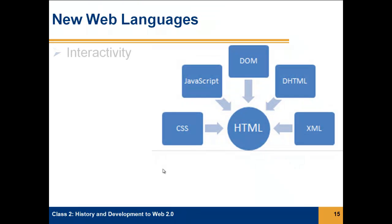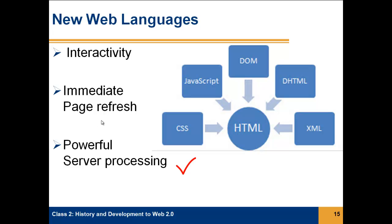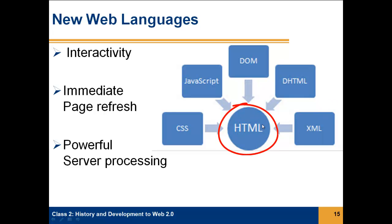New web languages emerged. These web languages allowed for interactivity in the web page, such as immediate page refresh without having to wait for the server to respond. Now we could process on the web server in addition to being interpreted on the browser, which meant we had the ability to do some powerful processing. Some of these languages include JavaScript, CSS, the Document Object Model, Dynamic HTML, and XML — all of which worked with the original HTML language of the web page. So we have new technologies being developed which enabled the web page to be a lot more interactive and productive.